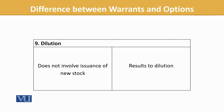Dilution — options do not involve the issuance of new stock. The options are run on the shares that already exist, so the dilution element is not present there. Whereas in the case of warrants, the company issues new shares, so the dilution component comes in. That is one of the major differences between the two.